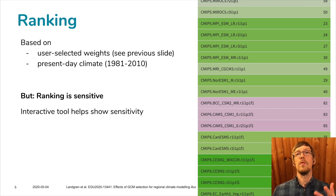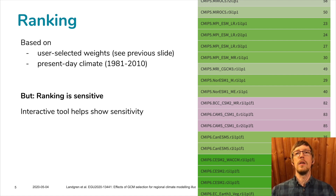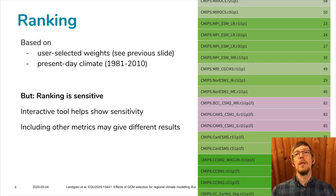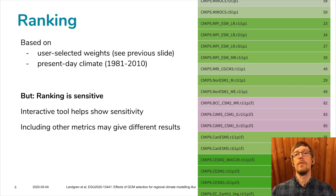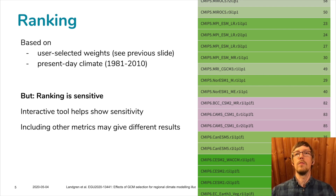By having this as an online tool you can very easily change the different weights and see how the ranking is changing. Of course, we should also remember that if you include other metrics it would give different results. So this could serve as a first idea of what selection you should make, but you may also want to do other analysis as well.